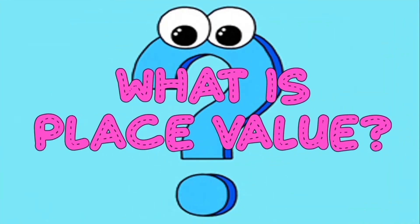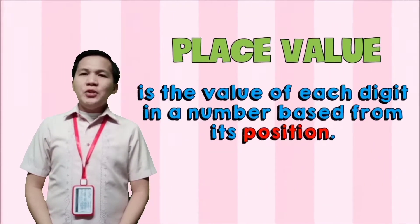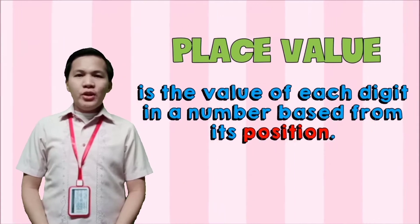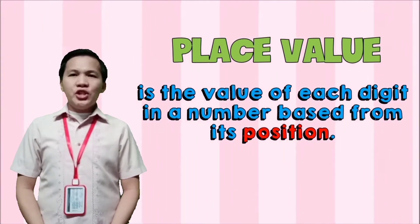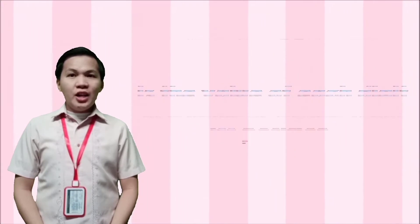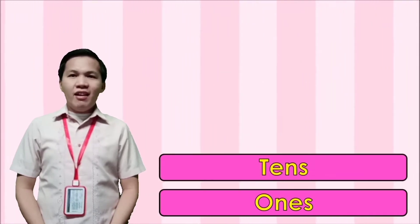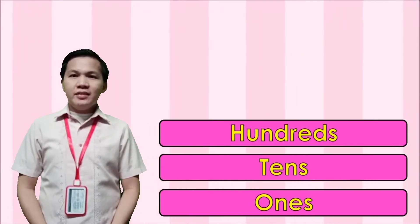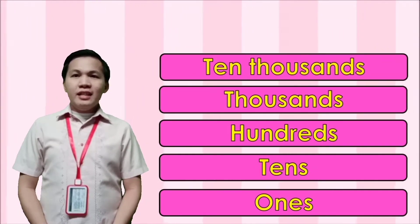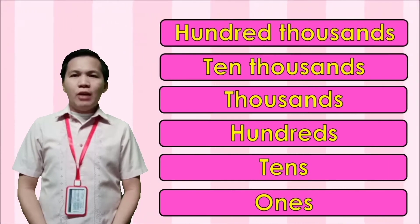What is place value? Place value is the value of each digit in a number based from its position. Any digit in a number has its corresponding place value — maybe ones, tens, hundreds, thousands, ten thousands, and hundred thousands.